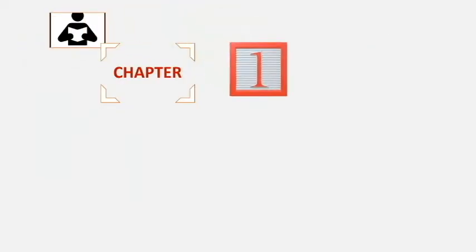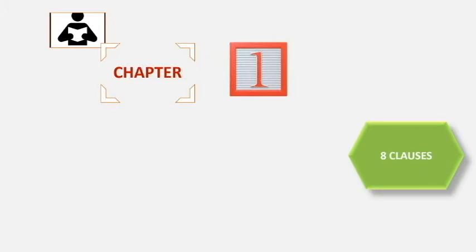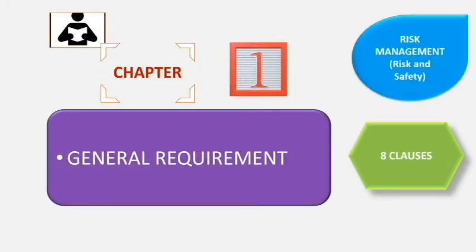Chapter 1 contains eight clauses and deals with general requirements. It covers the risk and safety that the manufacturer must comply with, safety and related risks for the intended user, risk management, post-market surveillance, the principles carried out for safety, and also transport and storage.